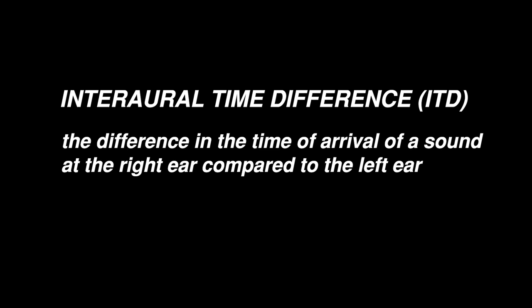Another cue humans use to localize sounds in space is an interaural time difference, or ITD. ITDs describe the difference in the time of arrival at the left ear versus the right ear. We know that if a sound comes from the left, it travels a shorter path to the left ear than to the right ear, and because of that, it takes longer to get to the right ear than to the left ear. The brain determines that the sound must have come from the left side. In fact, ITDs are so powerful that even if a sound is evenly loud in both ears, if it reaches one ear first before reaching the other, the brain will determine that the sound came from that side.